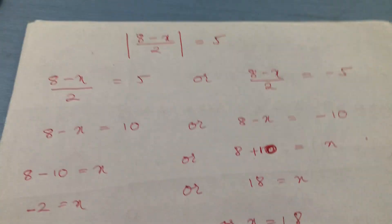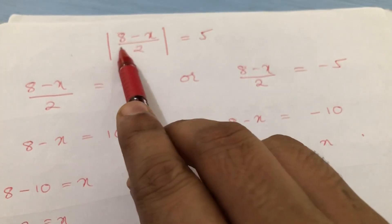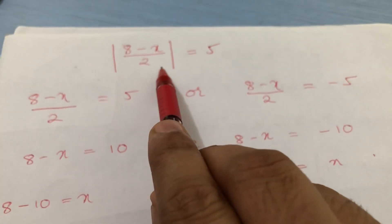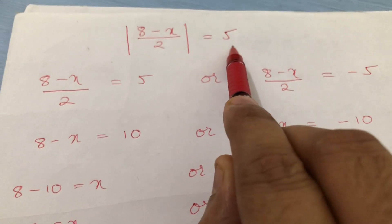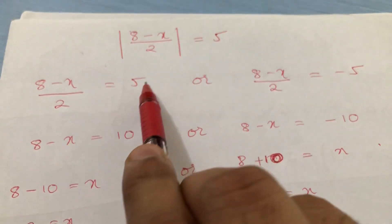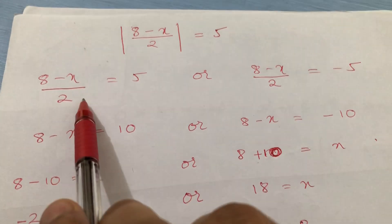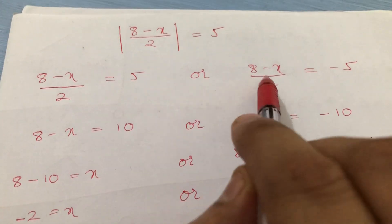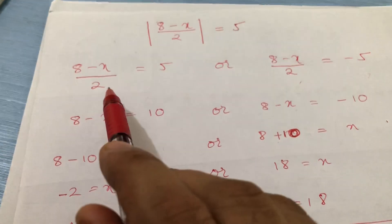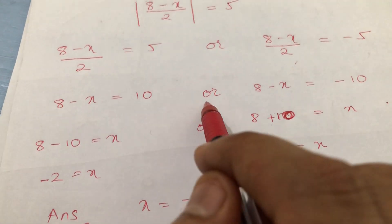We will skip problem 2 for you to do on your own, and move to problem 3. Mod of (8 minus x) over 2 equals 5. When the mod sign goes away, it becomes either plus 5 or minus 5. So (8 minus x) over 2 equals 5, or (8 minus x) over 2 equals minus 5.